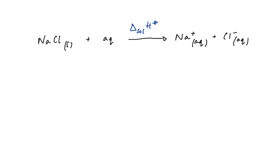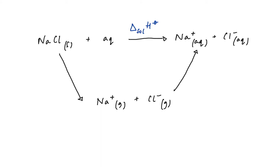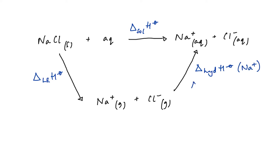We can think of dissolving in two steps. First, we need to break up our lattice — this is the lattice enthalpy or lattice energy for an ionic compound. We can turn this into a Hess cycle: step one, we break up our lattice to form gaseous ions; step two, we take our ions and hydrate them. The enthalpy changes are the lattice enthalpy for sodium chloride, plus the enthalpy of hydration for the sodium ion and the enthalpy of hydration for the chloride ion.